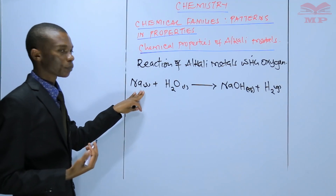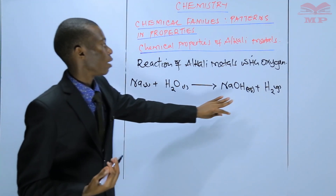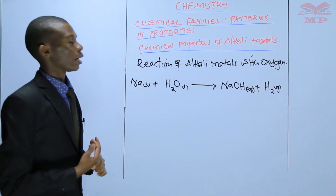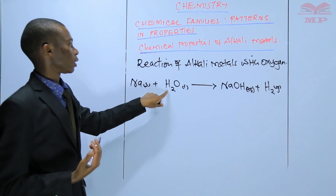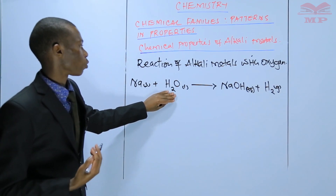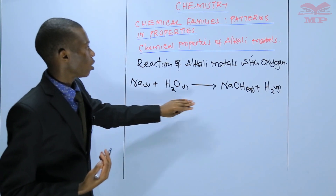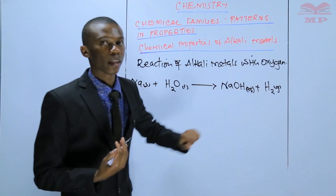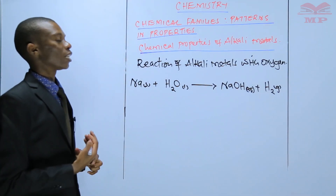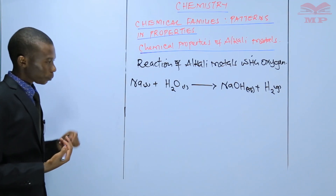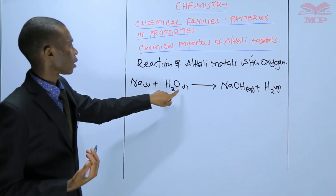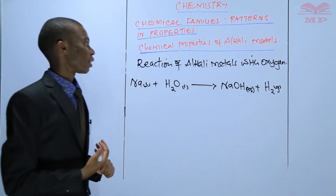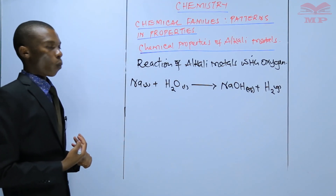On this side we have one sodium atom, and on this side we have one sodium atom — therefore the sodium atoms are balanced. Go to the next element, which is hydrogen: we have two atoms of hydrogen on the reactant side, and on this side we have one and these two, making them three. Therefore hydrogen atoms are not balanced. The next is oxygen — we have one oxygen atom on the reactant side, and on the product side it is still one.